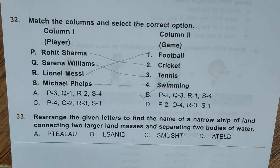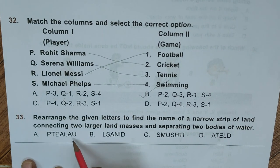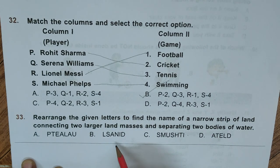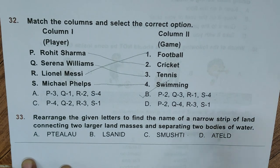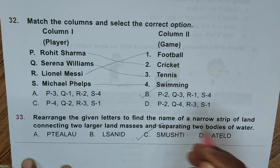Question 33: Rearrange the given letters to find the name of a narrow strip of land connecting two larger land masses and separating two bodies of water. Options: A. Isthmus (unscrambled), B. Island, C. Isthmus, D. Delta. Correct answer is C, Isthmus.